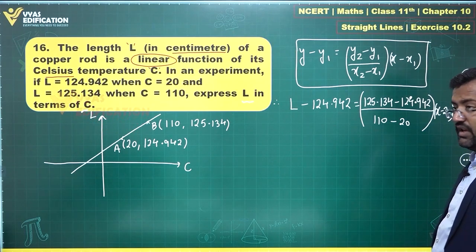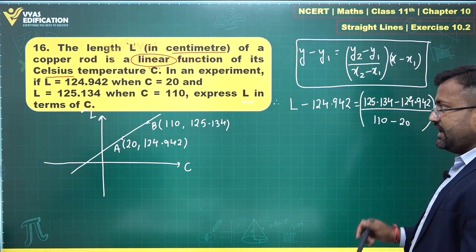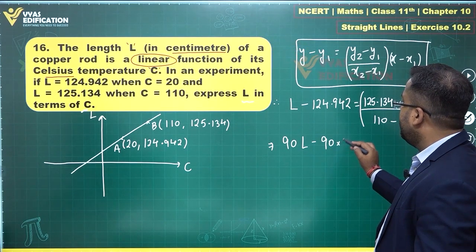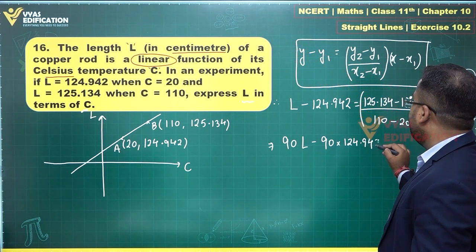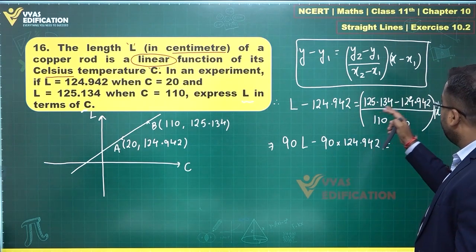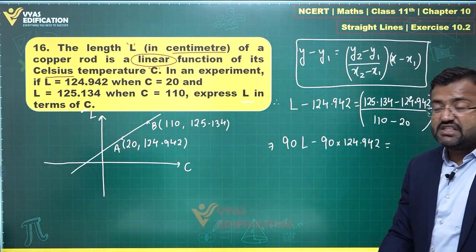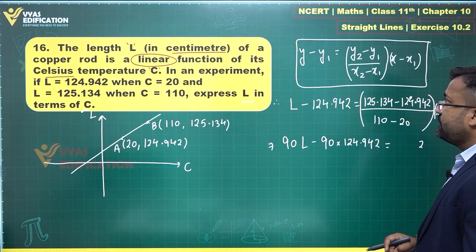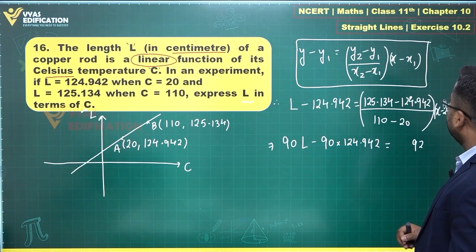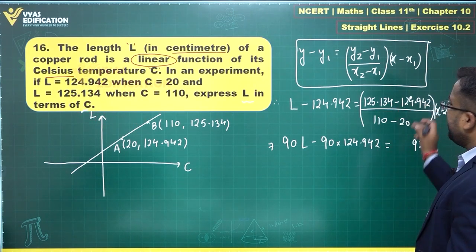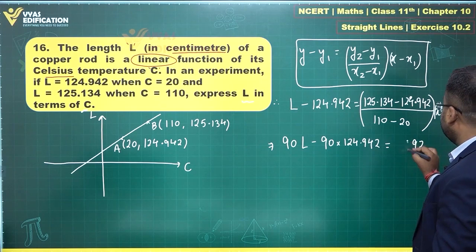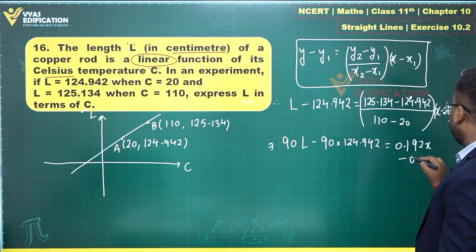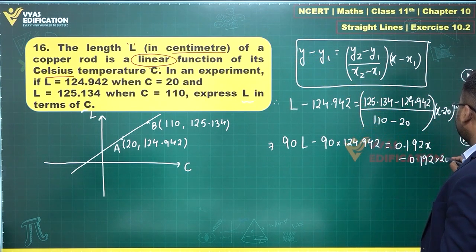This is what I am getting. Let's simplify this further. This is 90 over here. So this becomes 90 times L minus 90 times 124.942 is equal to—what is this? 125.134 minus 124.942. Let's subtract them. 4 minus 2 is 2 and 13 minus 4 will be 9. And then you get a 0 over here. 0 minus 9 is difficult, so what you will do is carry forward this.